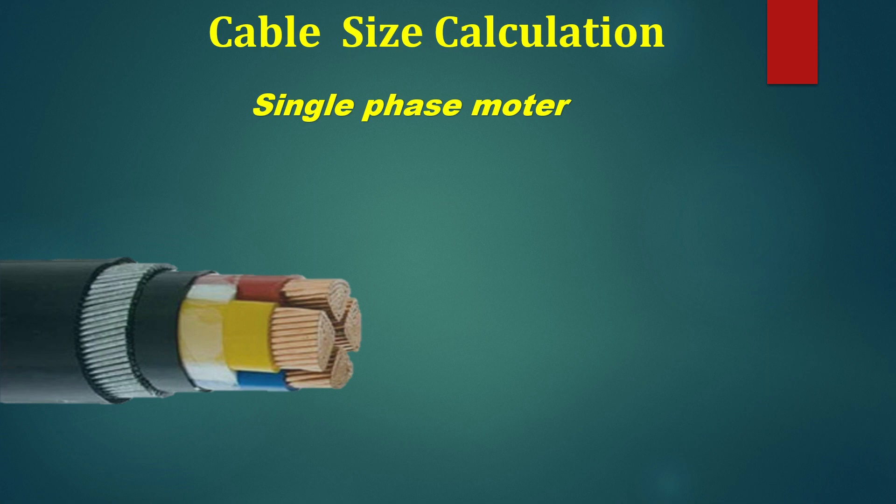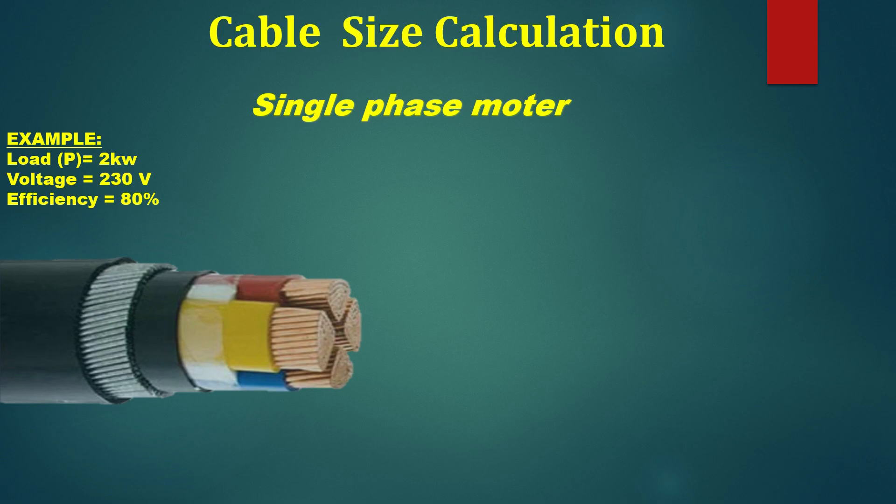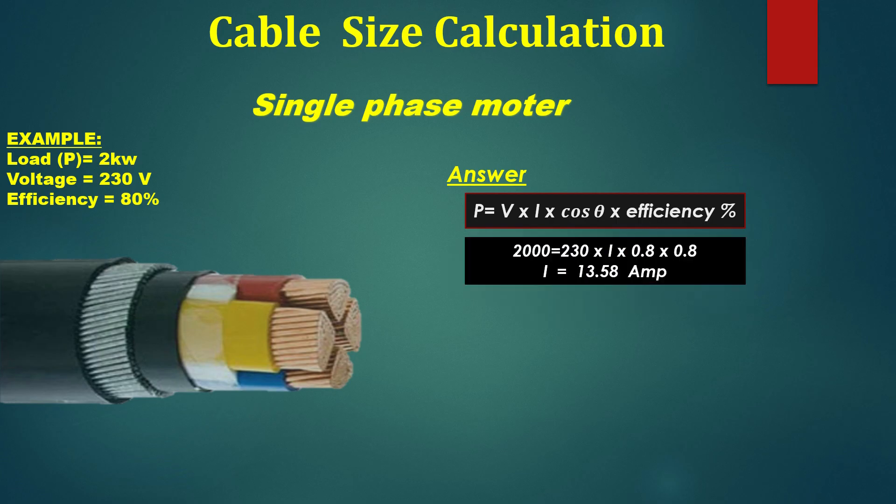For example, load P is equal to 2kW, voltage V is equal to 230V, efficiency is equal to 80%. So, the formula for single phase: P is equal to voltage multiplied by current multiplied by cos phi multiplied by efficiency.